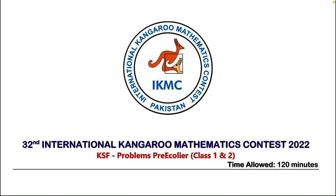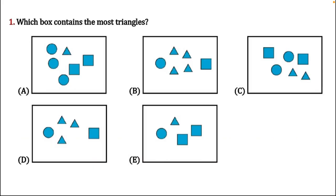This is IKMC, International Kangaroo Mathematics Contest, and I have taken questions from past year 2002 paper for pre-ecole, year class one and two. Let's move to question number one: which box contains the most triangles? We need to check the maximum number of triangles in each box and count them, so the box containing the maximum number of triangles is our correct answer.